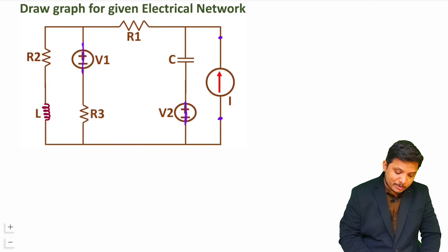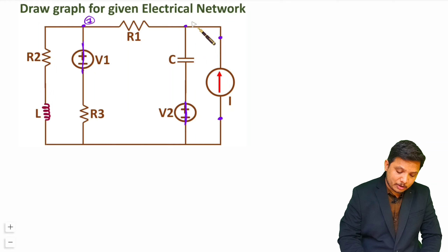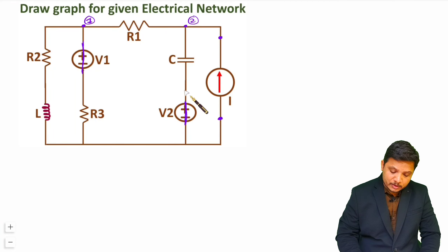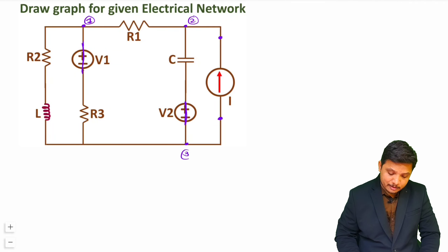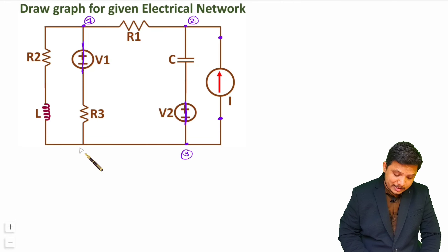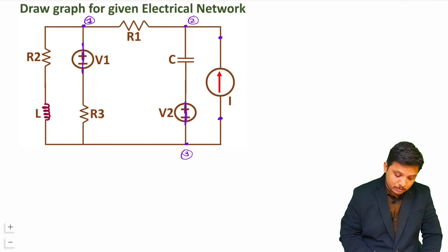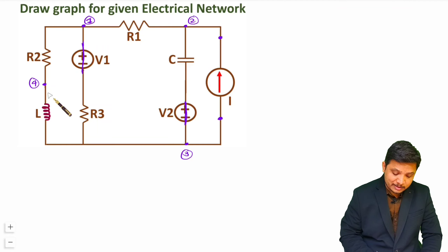Now we need to identify how many nodes are there in the circuit. Node number 1 is connected at R1, and the other terminal of R1 will be node number 2. Node number 2 is connected with the capacitor. The voltage source is short circuit here, so we have node number 3. Since this is a current source, it is open here. Node 3 is also connected with this resistor, and node 1 is connected with this resistor as this is short circuit. Node 1 is also connected with R2, and we have another connection with the inductor, so this will be node 4. This inductor is connected with node 3.